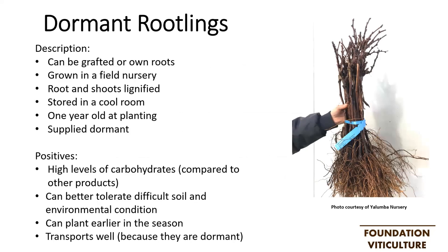The first product is dormant rootlings — dormant as in supplied out of the cool room as a dormant product, and rootlings because the product is supplied with developed and lignified roots. This product is propagated and calloused in the nursery and then grown in a field nursery, so when it comes to supply it is already one year old. The age and dormant aspect is a big positive — they have high levels of carbohydrates compared with other products, which means they can better buffer against adverse soil and environmental conditions, and because they are lifted in winter there is a degree of flexibility with planting timing.